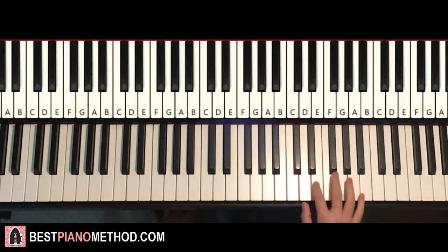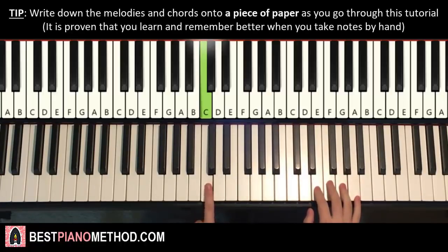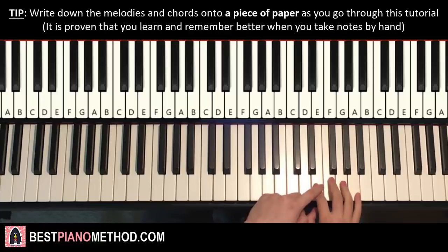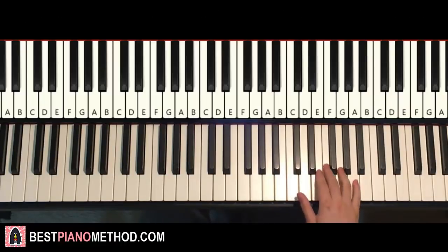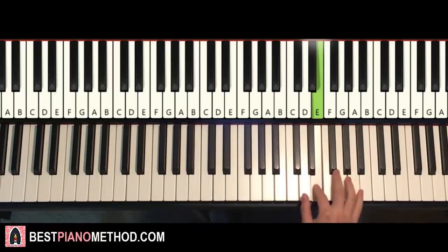So first part goes like this. Right hand starts on the E here, middle C is here for reference, you've got an octave C. E is where we start here. So E G A G E, and that's it for the first part for the right hand. One more time, it goes E G A G E and that's it for the right hand.